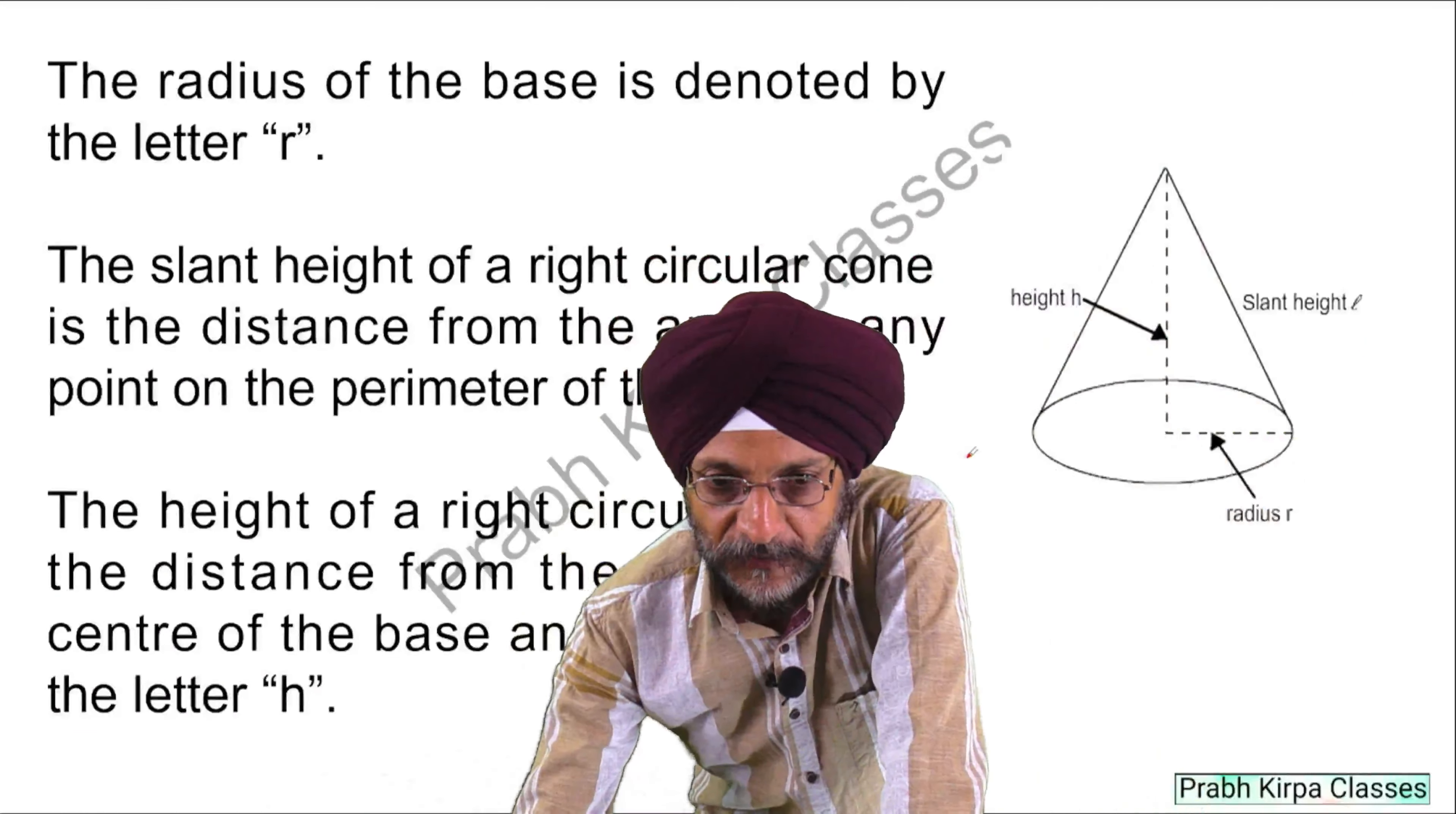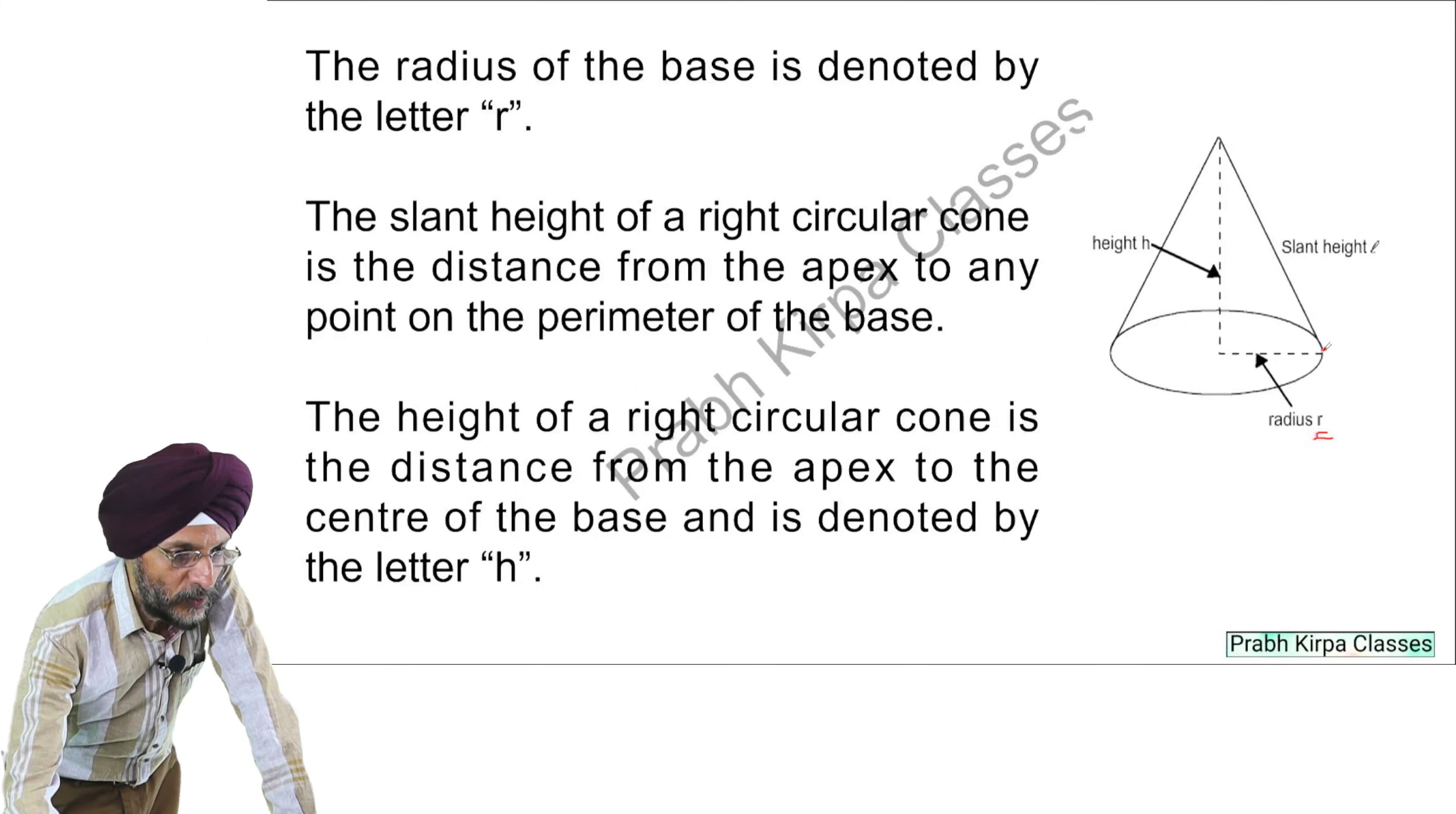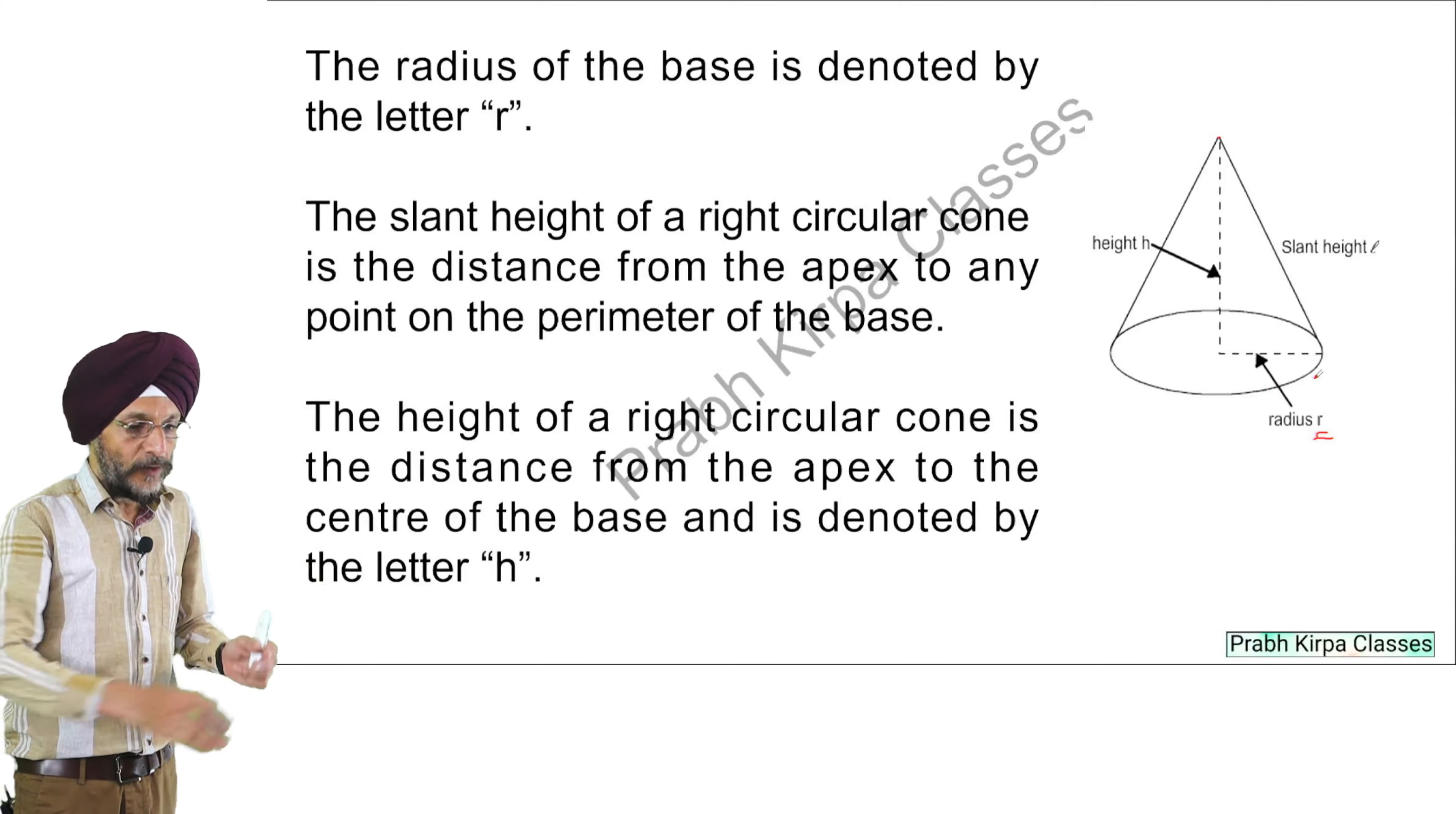The radius of the base is denoted by the letter R. The slant height of the right circular cone is the distance from the apex to any point on the perimeter of the base. Perimeter means the boundary line of the base.